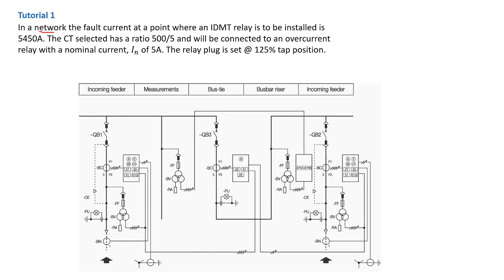In a network, the fault current at a point where an IDMT Relay is to be installed is 5,450 amps. It could be somewhere here or here, anywhere in the network.